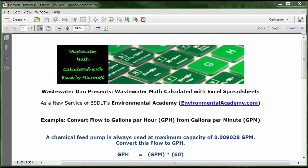then 60 would be our conversion factor. Then we have to determine the math operator. In this case, to convert from minutes to hours, we're going to multiply. So we're going to have a formula that reads GPH equals GPM times 60.